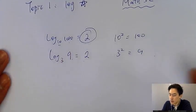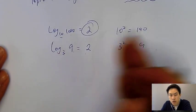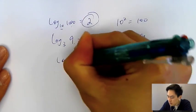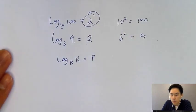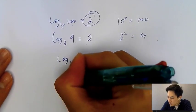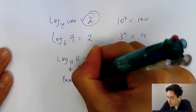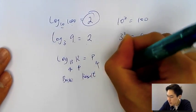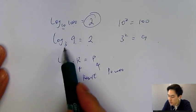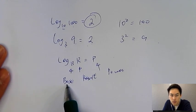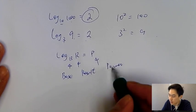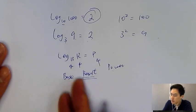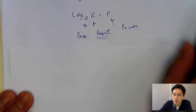That's the basic concept of log. You can remember it as BRP — Base, Result, Power. So for log base 3 of 9 equals 2: the base is 3, the power is 2, and the result is 9. That is the basic concept of log.